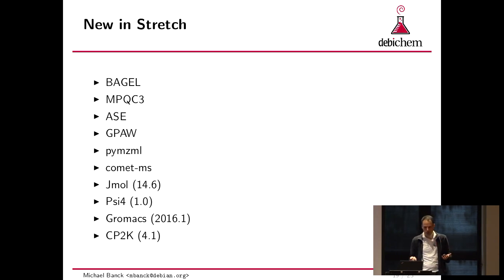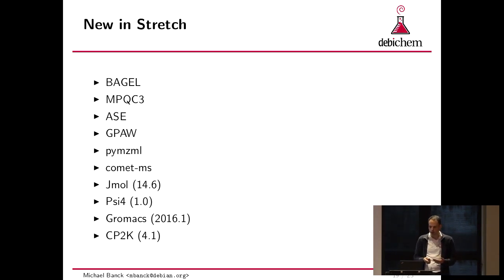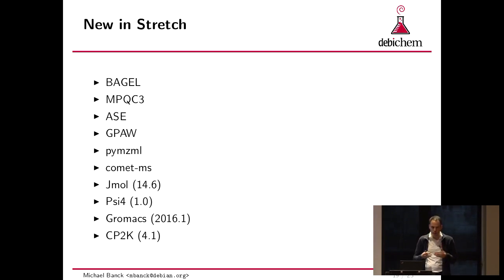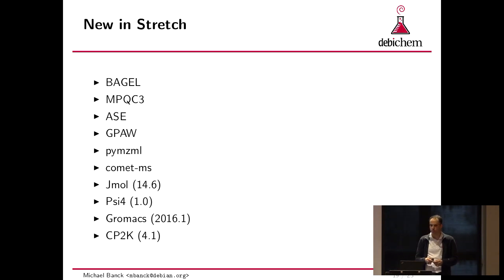A couple of packages that are new in Stretch: Jmol got updated, which is great. PSY-4 is finally at 1.0 — this is a very standard package for people to work on. CP2K got updated. And Graham Ings brought ASE, the Atomic Simulation Environment, into Debian.